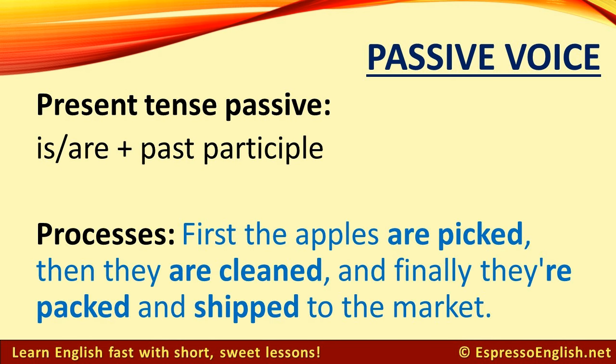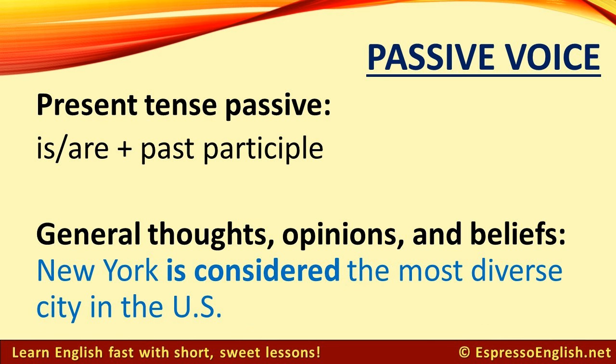We often use the present tense passive for processes. For example: first the apples are picked, then they are cleaned, and finally they're packed and shipped to the market. We also use the present tense passive voice for general thoughts, opinions, and beliefs.